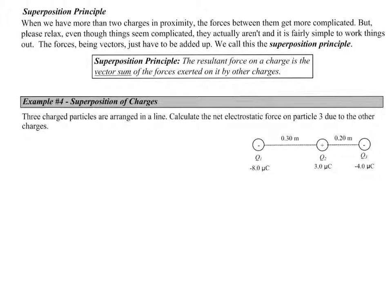We talked briefly at the end of the last video about the superposition principle, which is that the resultant force on a charge is the vector sum of the forces exerted on it by other charges. In this first example, we have three charged particles arranged in a one-dimensional line.